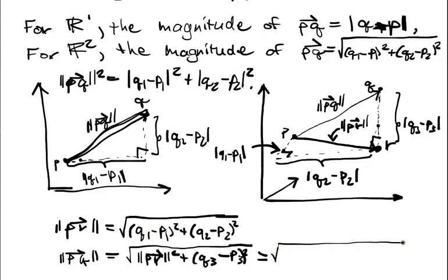And what happens when I plug this into there? Well, I just get Q1 minus P1 square plus Q2 minus P2 square plus Q3 minus P3 square. And that's it. And we're starting to see a pattern here.